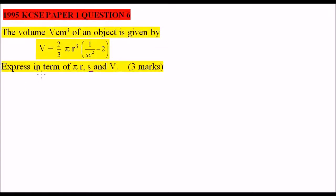This is 1995 KCSE paper 1, question number 6. It is from the topic formula and variation in form 3, and it says the volume V cm³ of an object is given by V equals 2 over 3 pi R cubed into bracket 1 over SC squared minus 2, expressed in terms of pi R, S and V. So it's only C, so it's like we are saying, we express C as the subject of this formula.